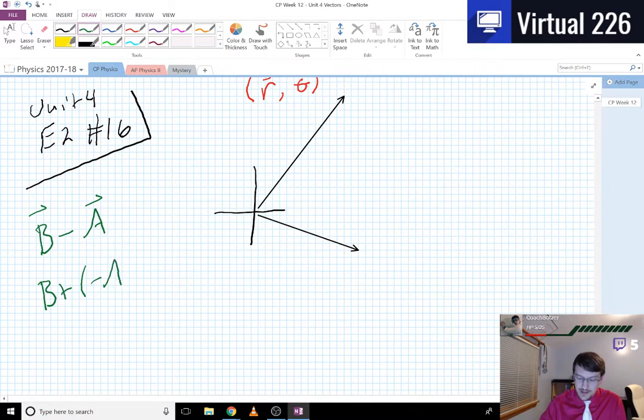...B plus negative A, right, as we just saw in that last problem. To get the negative A vector, you're just gonna go in the opposite direction, so your negative A vector is actually gonna extend back like that a little bit. That's negative A.